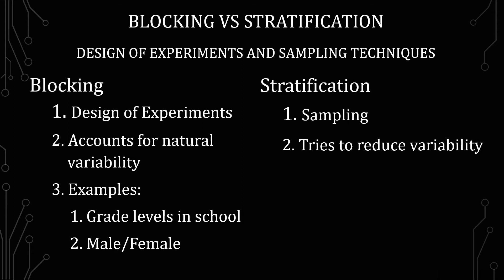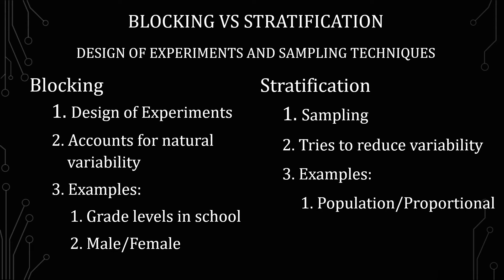The first example is a population proportional sample, where you're setting up certain strata based on the population. So instead of just doing 1,000 people randomly, you'd want to do a percentage-based stratification sample that reflects what demographics are in the population, whether that be male, female, or race. As long as you can put people into those strata pretty easily, that shouldn't be a problem.